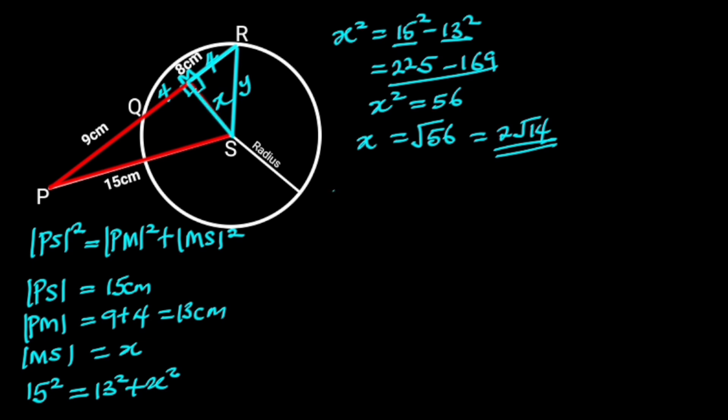So we will still apply Pythagoras theorem to find the value of Y in this triangle. From Pythagoras theorem, RS squared is equal to MS squared plus MR squared. RS is equal to Y, that is the radius of the circle. MS is equal to 2 root 14, and MR is 4 centimeters.